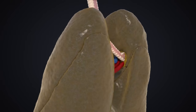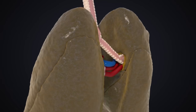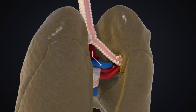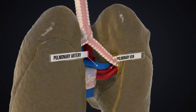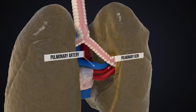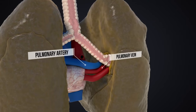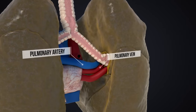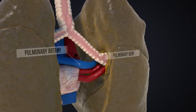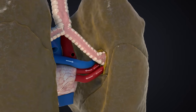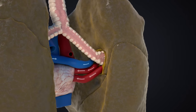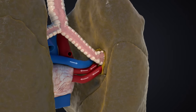The centrally located heart pumps deoxygenated blood to the lungs through the pulmonary arteries. Oxygenated blood returns to the heart through the pulmonary veins, and eventually to all organs.